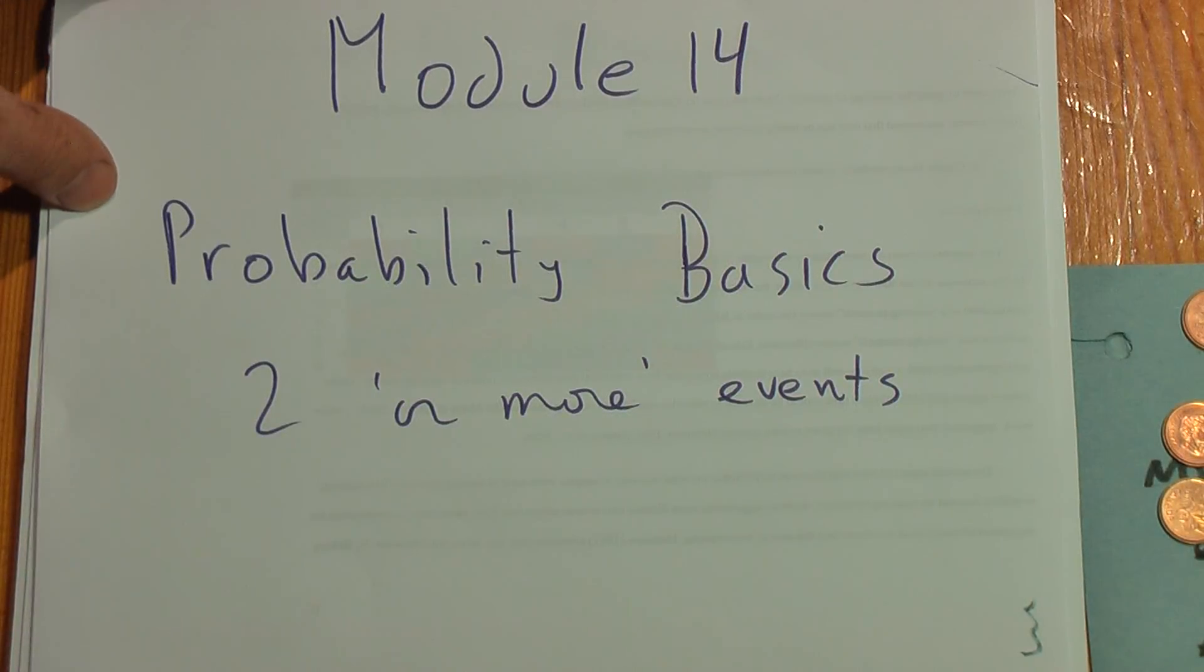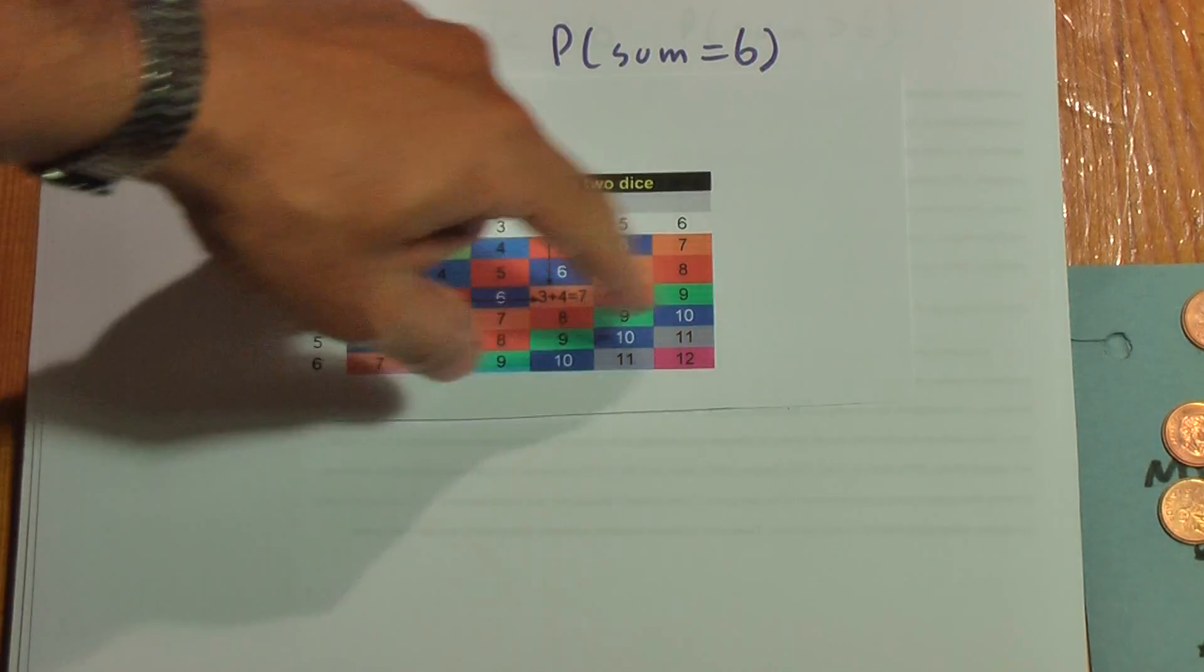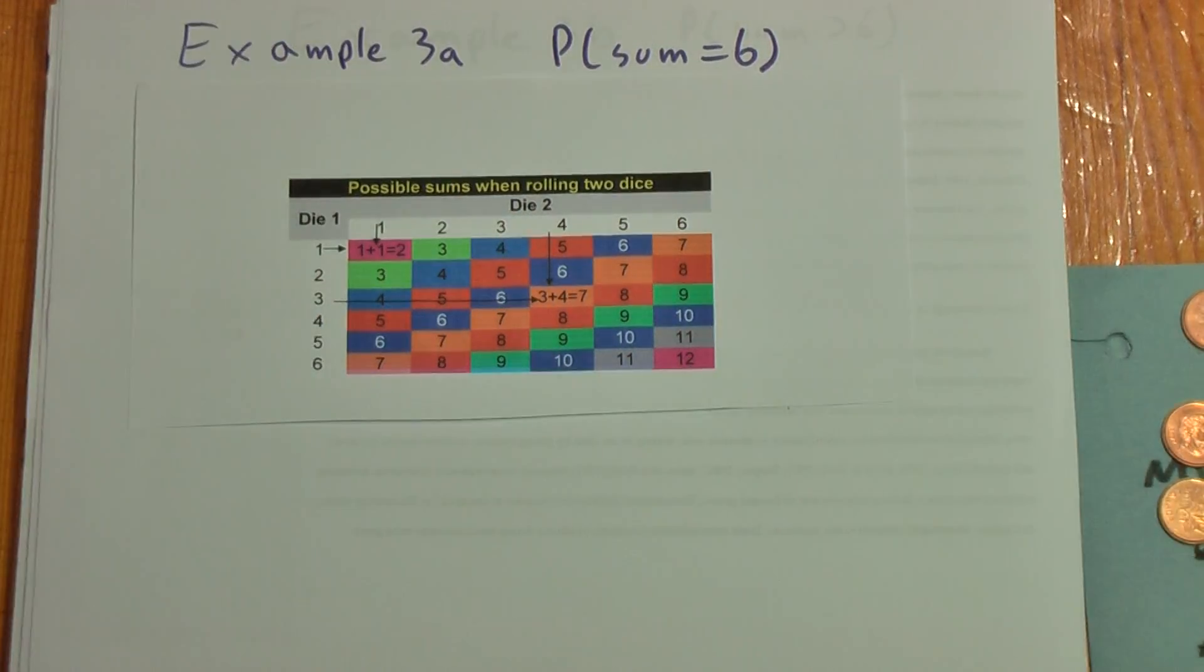Module 14, Probability Basics. Two or more events. Example 3a. Here we're working with two dice. And this chart shows you all of the possibilities. The colored numbers are all the sums.